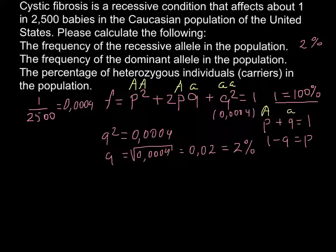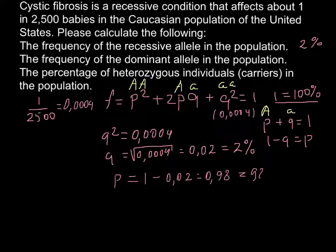We know that q is 2%, so p equals 1 - 0.02, which equals 0.98 or 98%. This is the frequency of the dominant allele A.